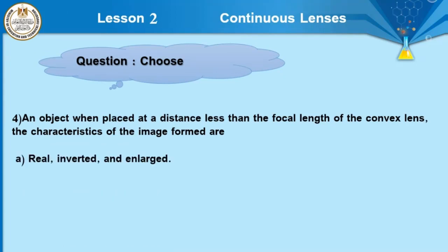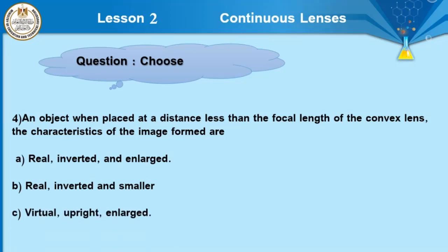Question 4: an object placed at a distance less than the focal length of a convex lens forms an image that is virtual, upright, and enlarged. This is the only state in which a convex lens forms a virtual image, and this property is used to make a microscope.